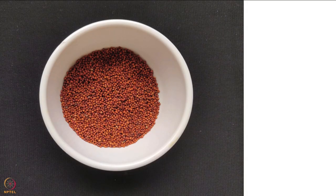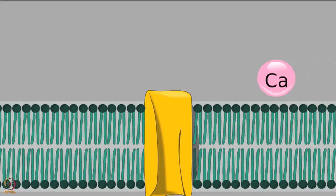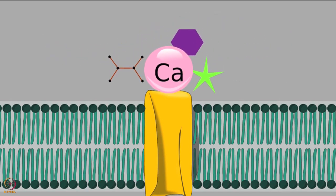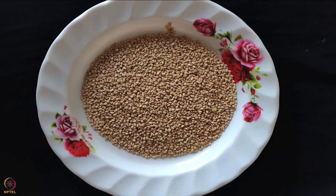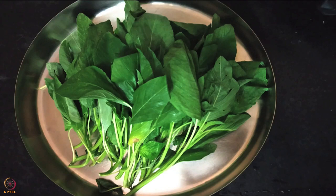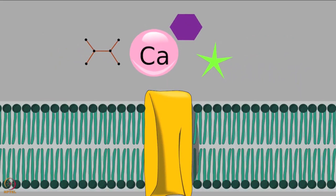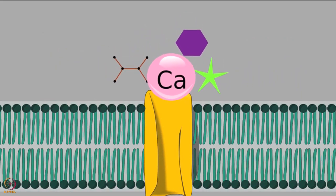Finger millet is also a rich source — 30 g provides 110 mg of calcium. Along with food intake, calcium absorption is equally important. Presence of oxalates, phytates, and fibre found in nuts, seeds, beans, and green leafy vegetables can affect calcium absorption. These substances may bind with calcium to form an insoluble complex, inhibiting calcium absorption in the body.